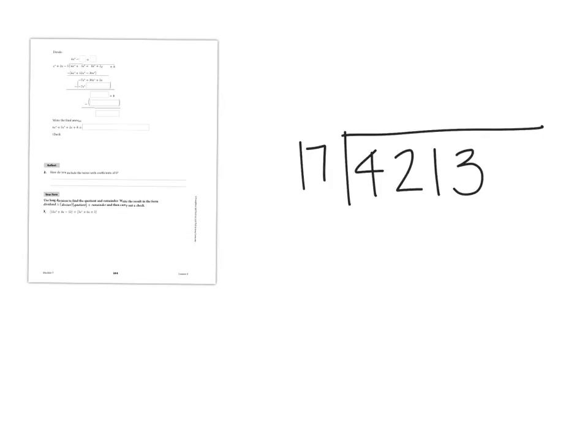So I have 17 divided by 4,213. If I'm actually long dividing this by hand, what's the first thing I'm going to do? You need to figure out how many times does 17 go into 42. 17 goes into 42 how many times? Twice. And then what do I do after I figured that 2 out?